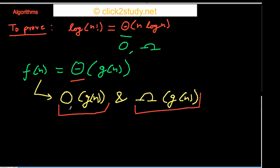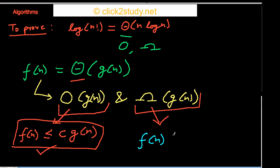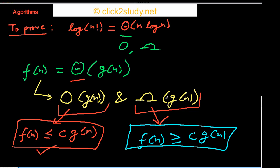How do you prove the O part? If you can show that f(n) is less than some constant c times g(n) for sufficiently large n, then you have proved O(g(n)). For the Ω part, you do the opposite: you show that f(n) is greater than or equal to c times g(n) for sufficiently large n. If you can do these two parts, you have shown O(g(n)) and Ω(g(n)), and therefore Θ(g(n)).